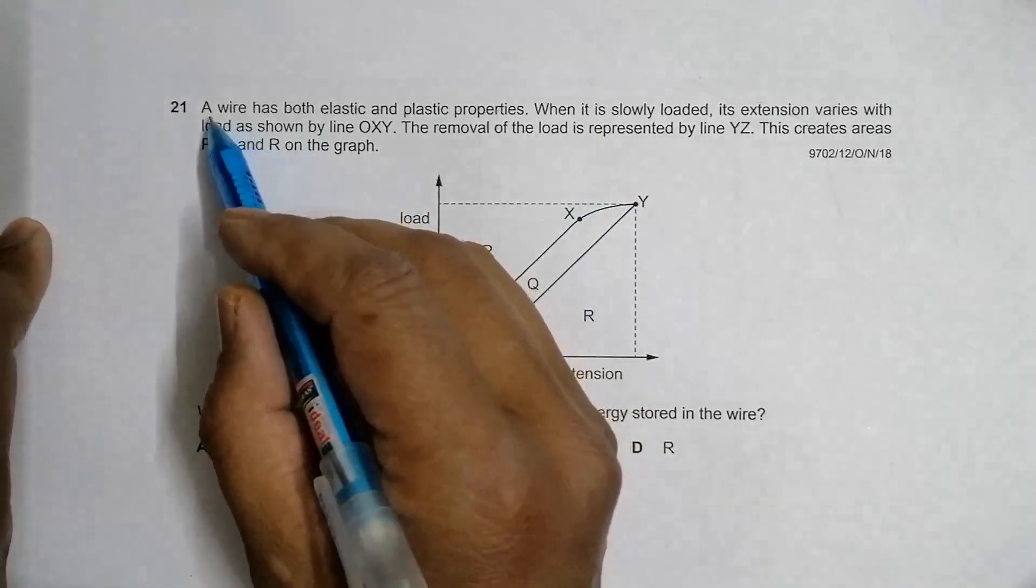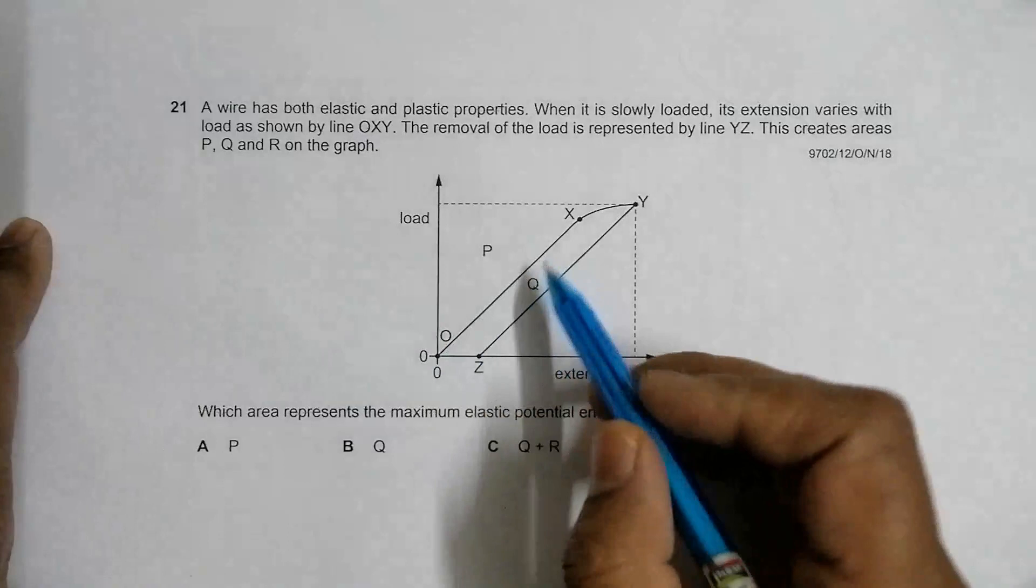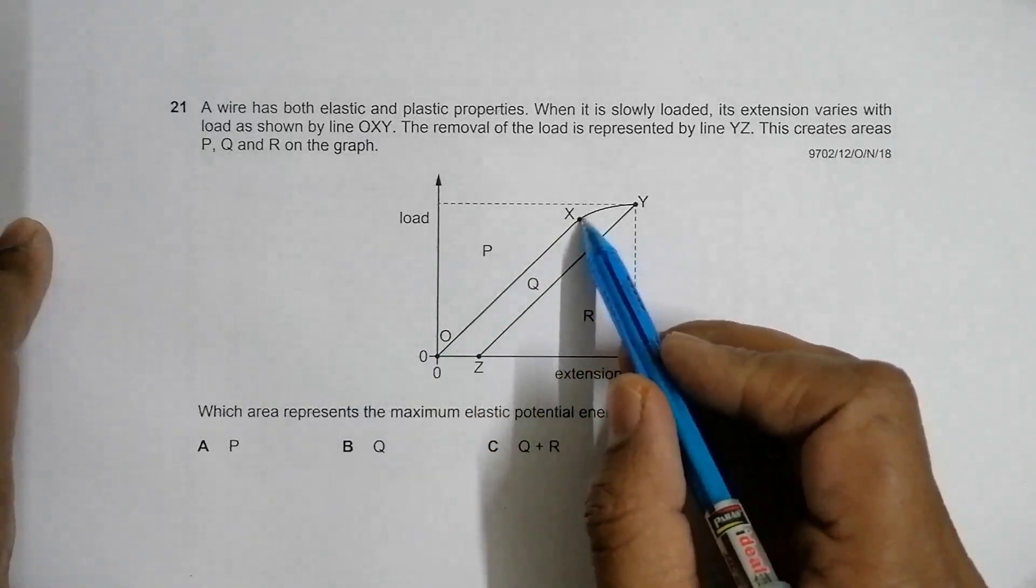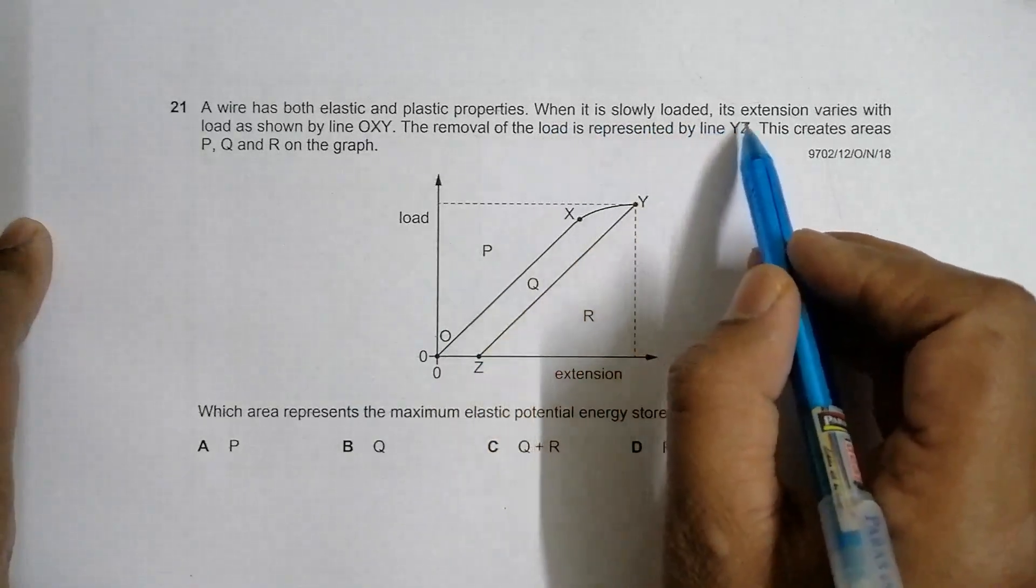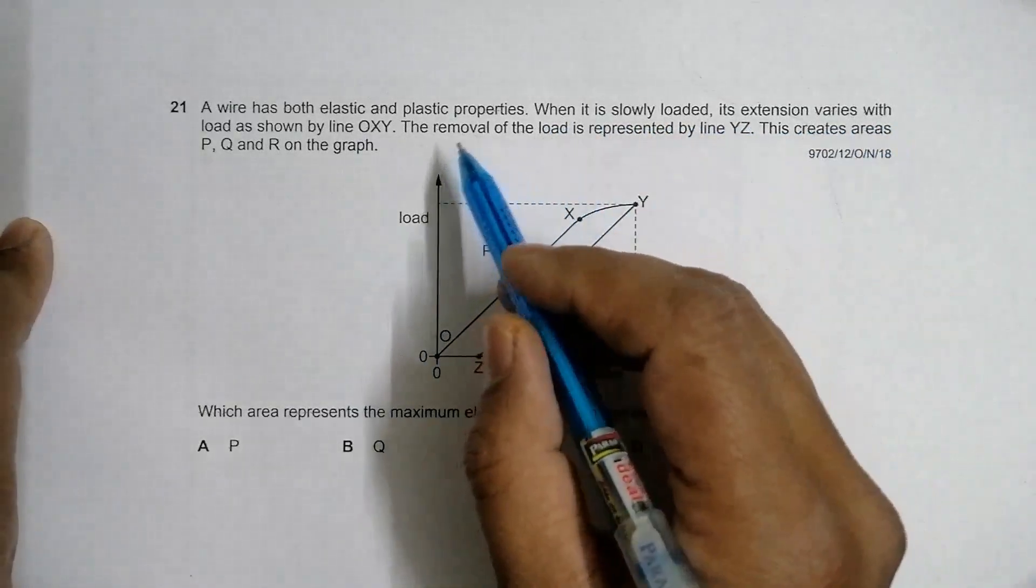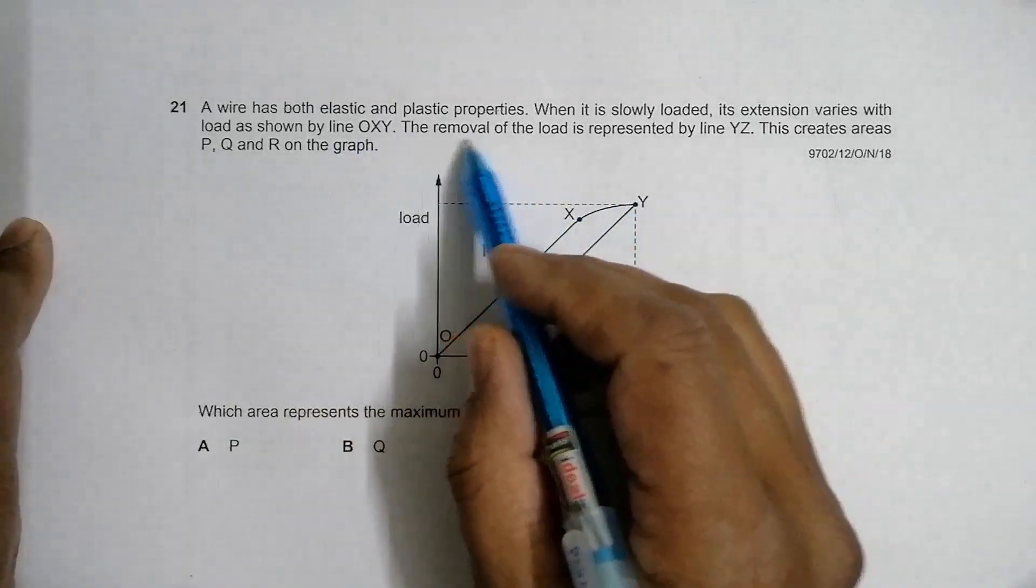The wire has both elastic and plastic properties. From the graph, O to X is elastic, and from X things turn plastic. When slowly loaded, its extension varies with load as shown by line OXY.